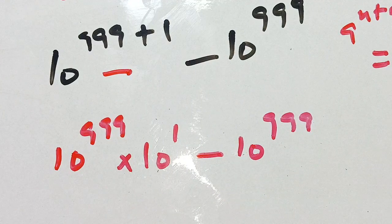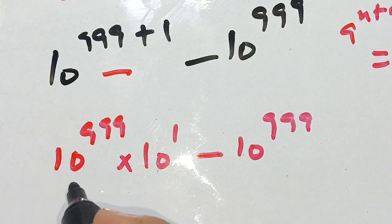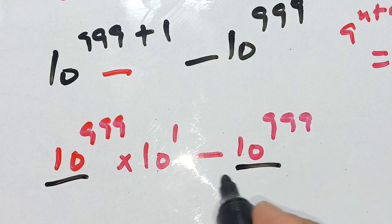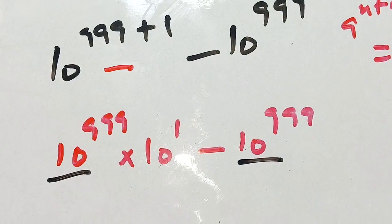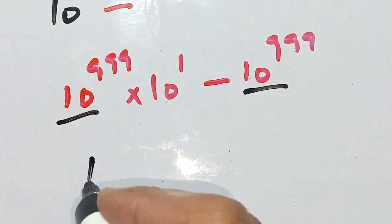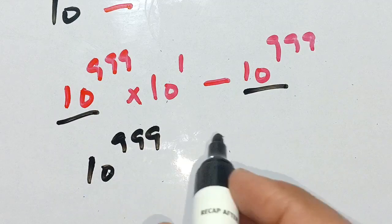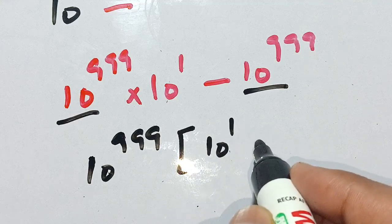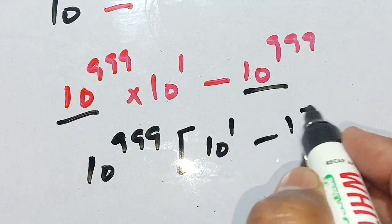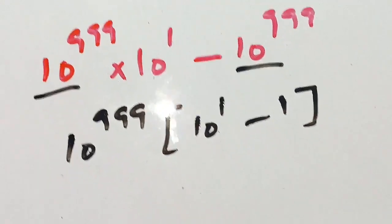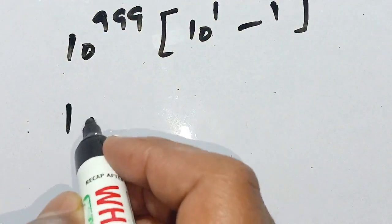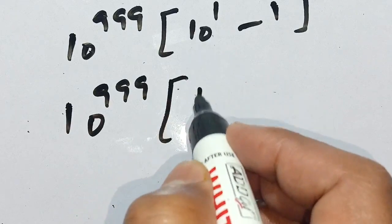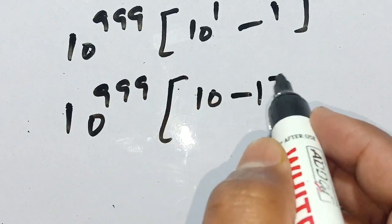In both terms, 10 raised to power 999 is common. We take it out, and we get 10 raised to power 999 common from both terms. The remaining part is 10 raised to power 1 minus 1. In the next step we have 10 raised to power 999 as it is, and 10 raised to power 1 equals 10, minus 1.